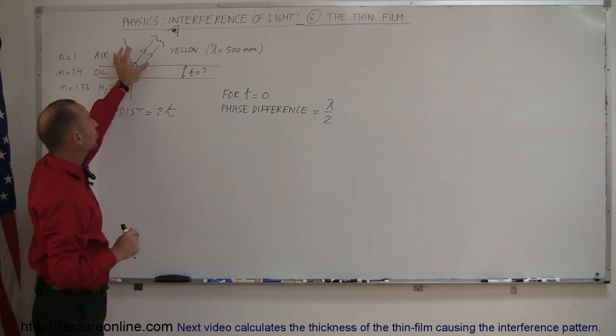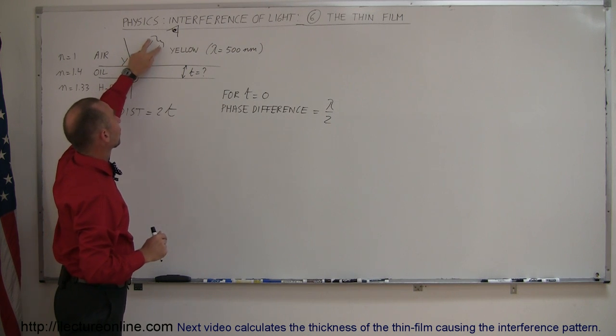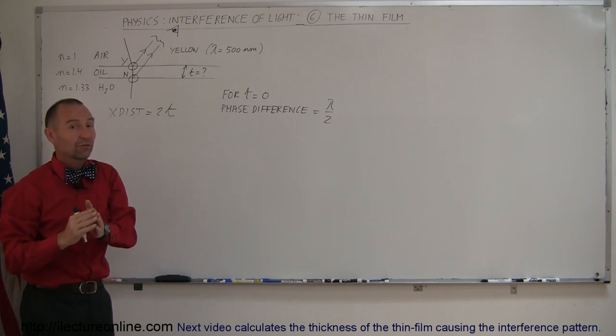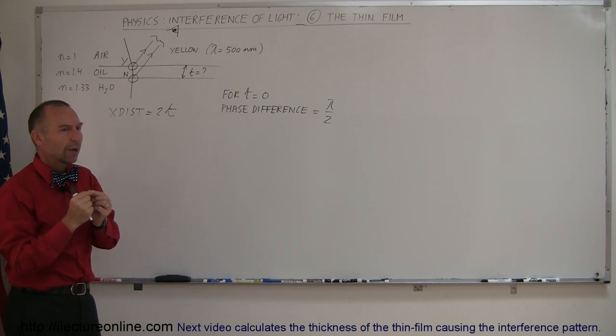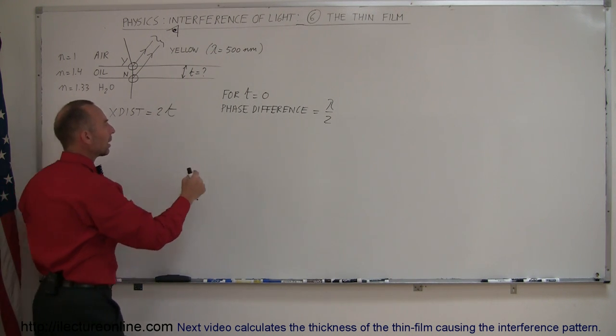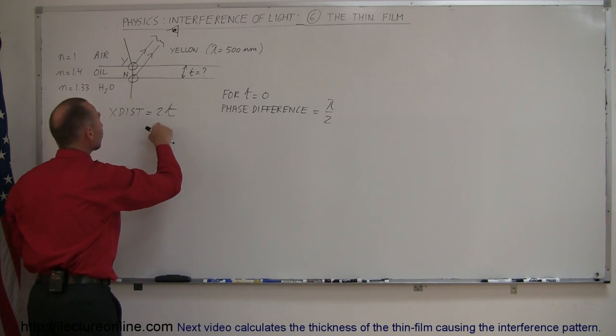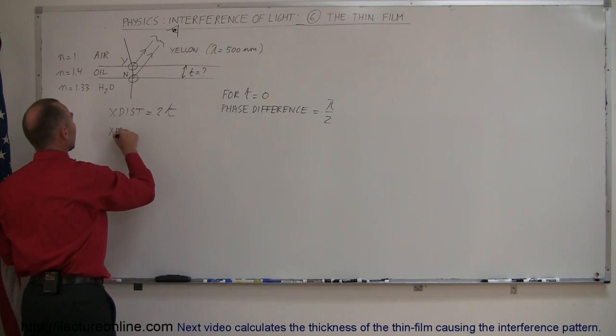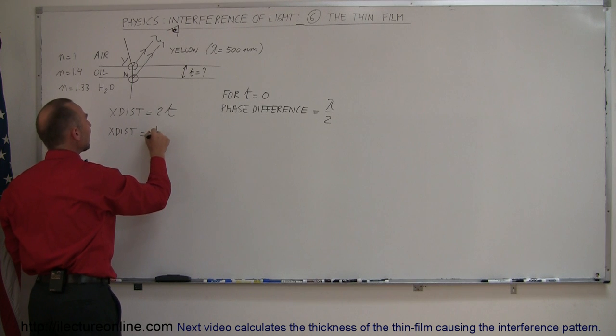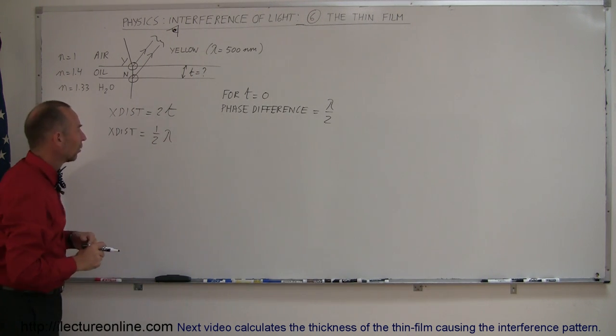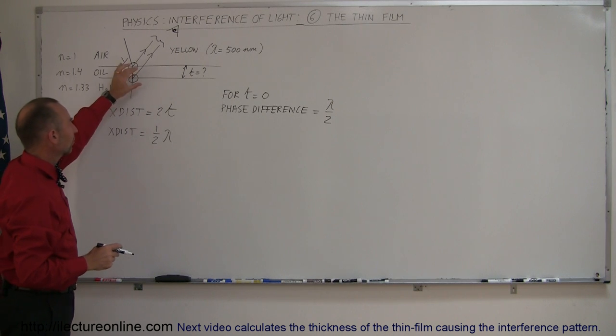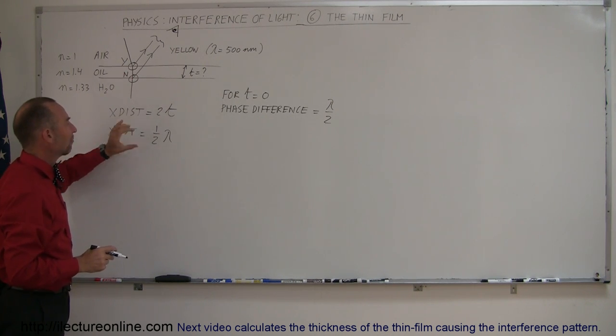Now, to get the condition for the two waves to come together here and have constructive interference for yellow light, you want the phase difference to be a full wavelength. That means you only need to make up the other half a wavelength, which means the extra distance traveled must therefore only be a half a wavelength through the oil instead of a full wavelength. So that means that twice the thickness of the film must be equal to a half a wavelength.